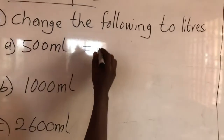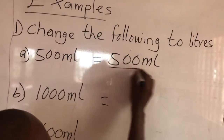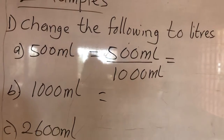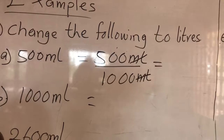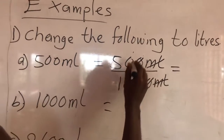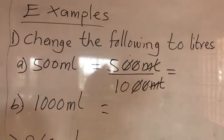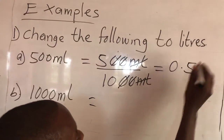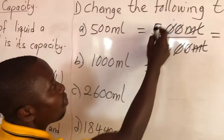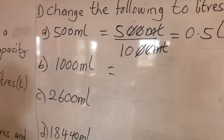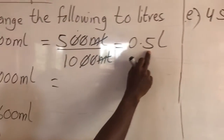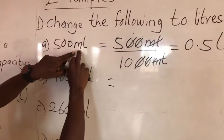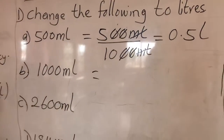For example, 500 ml divided by 1000: we cancel the zeros — this zero cancels this zero, this zero cancels this zero — leaving us with 5 over 10. In decimal form, 5 over 10 gives us 0.5. So 500 ml equals 0.5 liters, which means it is half of one liter.